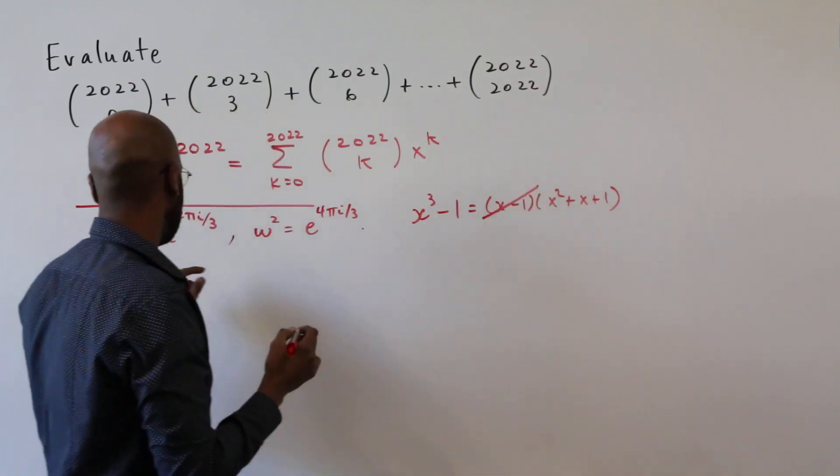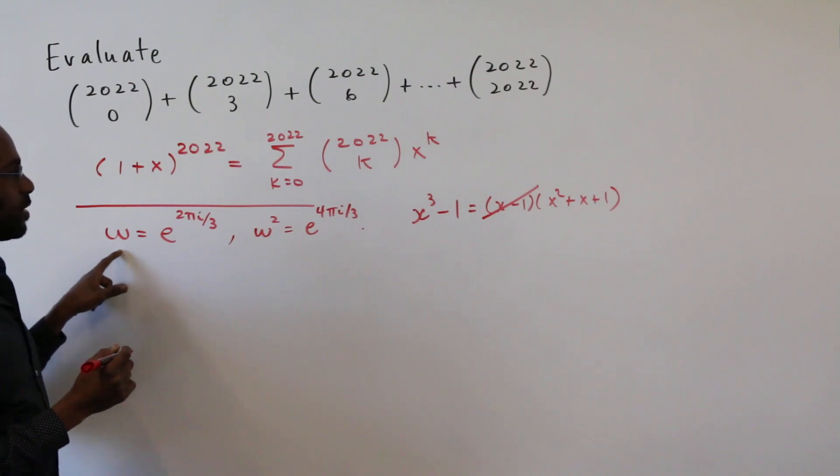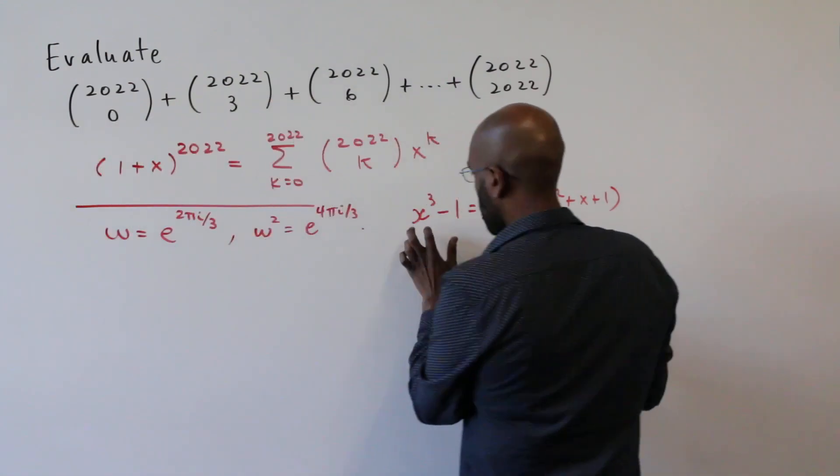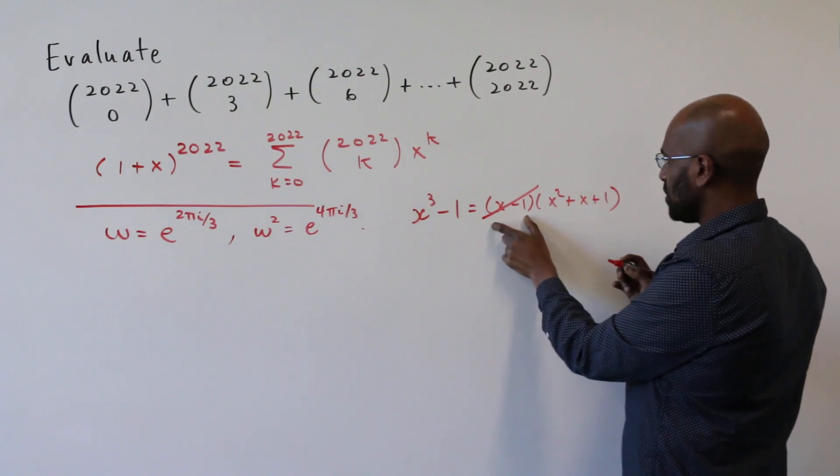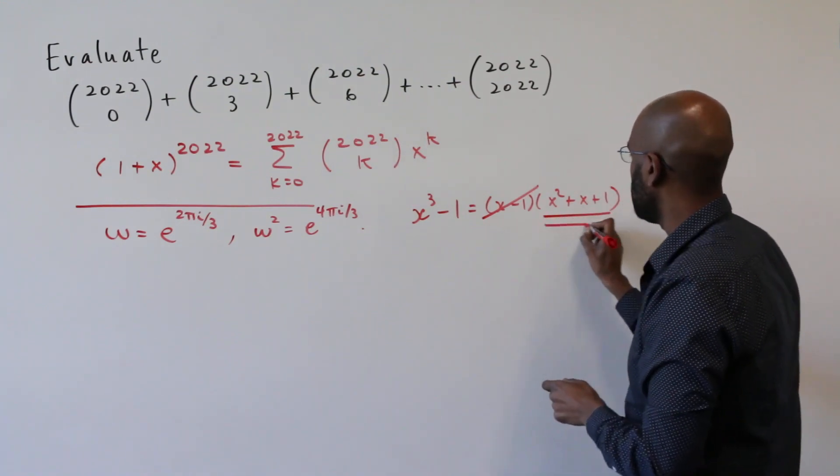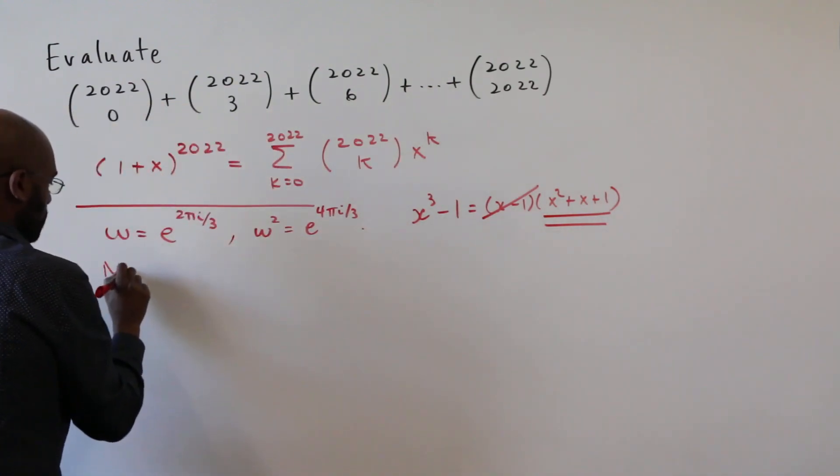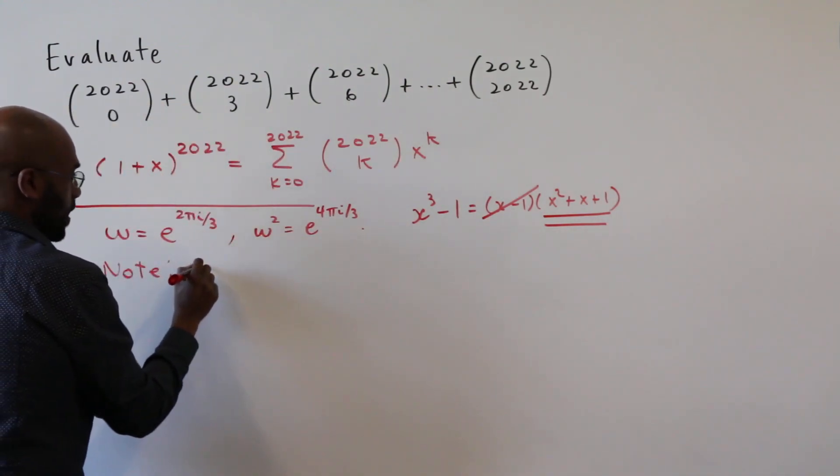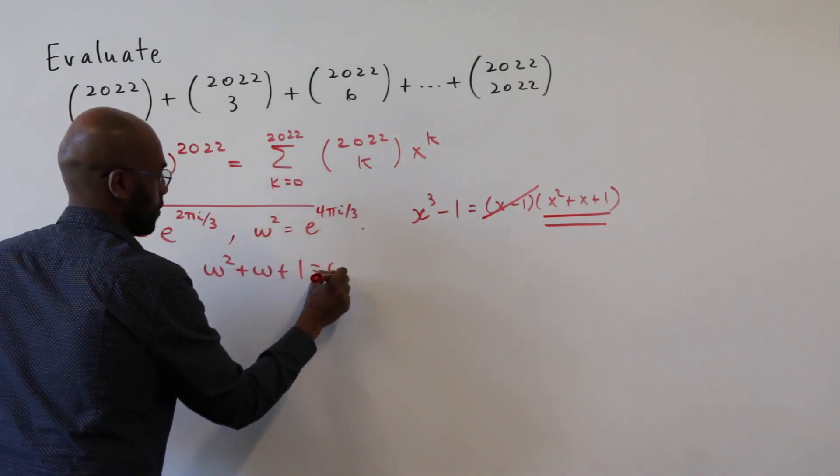So in particular, if I look at this, this value here omega, omega cubed minus one is zero, but omega minus one is not zero. So omega is a root of this piece here. So we'll make a note that omega squared plus omega plus one is zero.